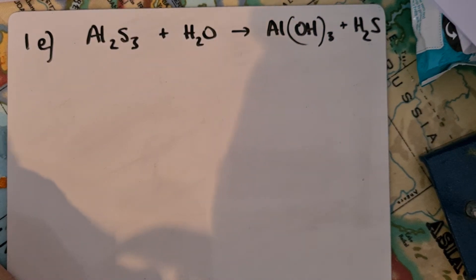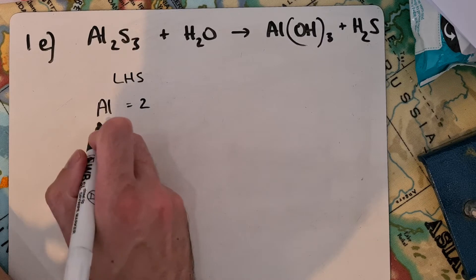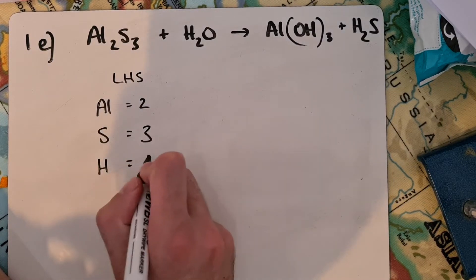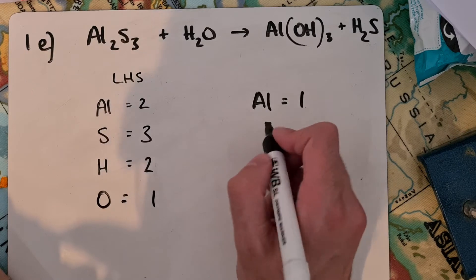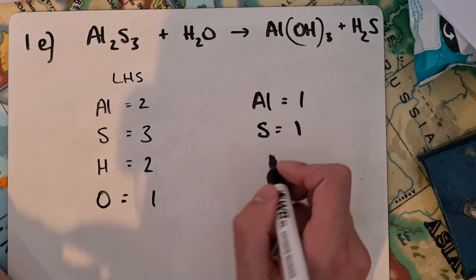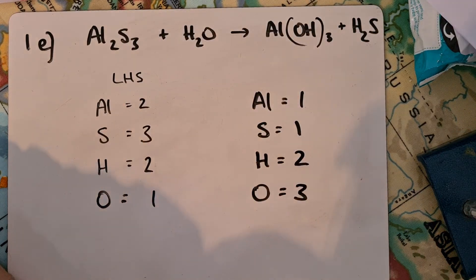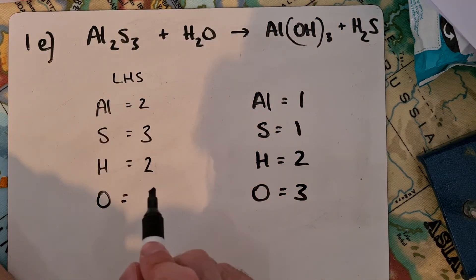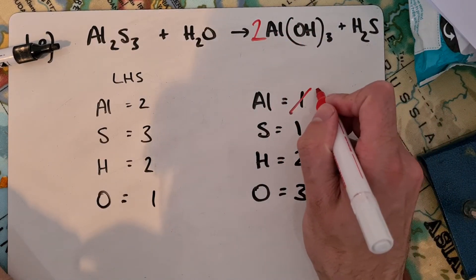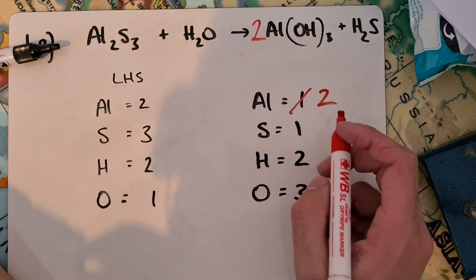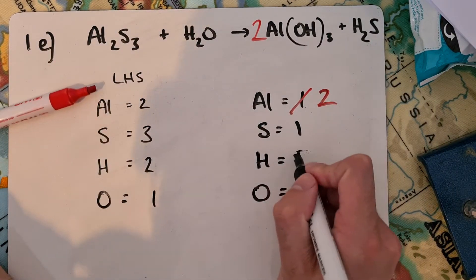We need to check if it's balanced. On the left side: 2 aluminums, 3 sulfurs, 2 hydrogens, 1 oxygen. On the right: 1 aluminum, 1 sulfur, 2 hydrogens, 3 oxygens. So a bit of balancing needed. I'll start with aluminum hydroxide - put a 2 there, which gets aluminums balanced at 2. But I miscounted - I have 5 hydrogens to begin with. Now I'll have 2 times 3, so 6 plus 2, giving 8 hydrogens and 6 oxygens.